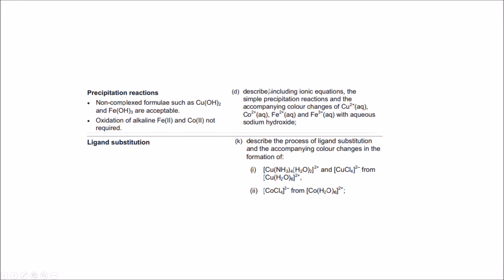So in summary: we've written every ionic equation for the precipitation reactions and discussed the colour changes for the four required ions. The OH- comes from sodium hydroxide when aqueous. For ligand substitution, we've defined what it is, covered the colour changes for hexa-aqua copper reacting with excess HCl and excess ammonia, noted what happens with a small amount of ammonia, and covered hexa-aqua cobalt reacting with HCl to form the cobalt chloride complex. That's everything — thank you.